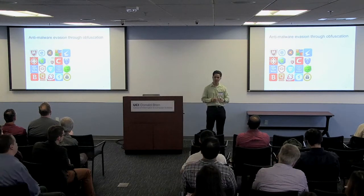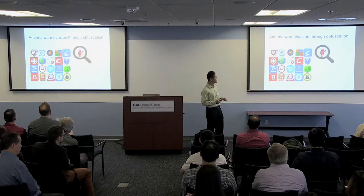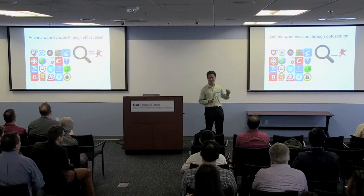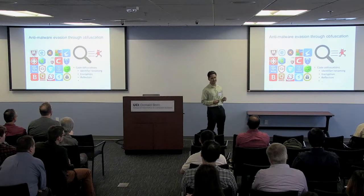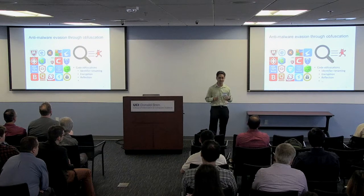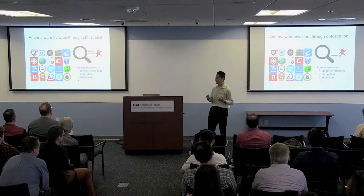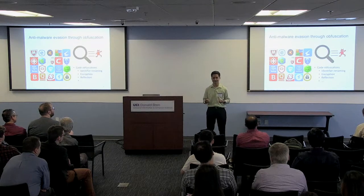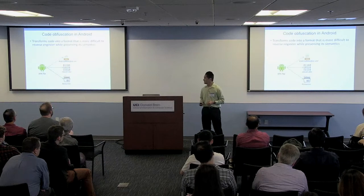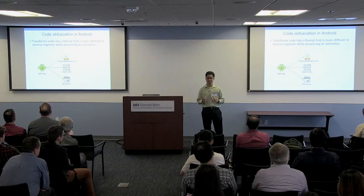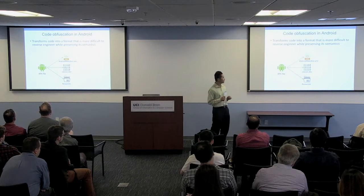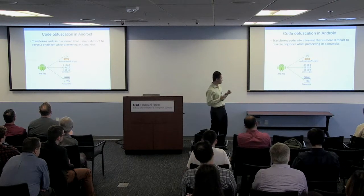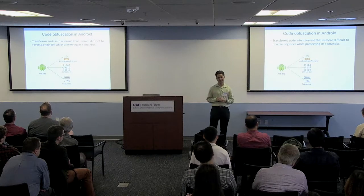When these commercial anti-malware products try to detect malware on your device, the malware will try to evade detection. Often they rely upon code obfuscations like renaming identifiers, encryption of strings and arrays, and reflection — the ability of an app to inspect or modify itself during runtime. These code obfuscations transform a program so that it becomes more difficult to reverse engineer, while still preserving the semantics of the program.